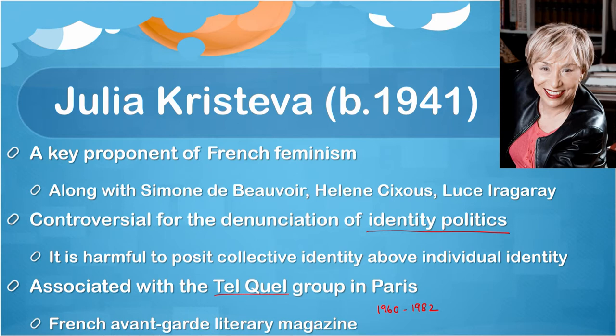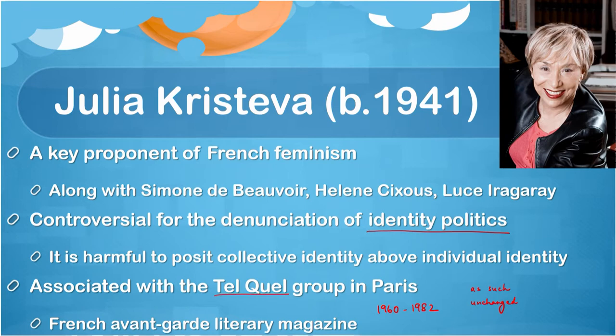She drew a lot of critical flak on that account. Interestingly, she was also associated with the Tel Quel group in Paris. Tel Quel was an avant-garde French literary magazine which ran from 1960 to 1982. A number of key theorists of French structuralism and postmodernism were associated with Tel Quel, such as Barthes, Foucault, Derrida, Umberto Eco, and Gérard Genette. The term Tel Quel means 'as such' or 'unchanged.'